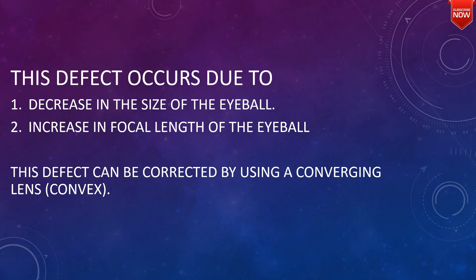Hypermetropia occurs due to a decrease in the size of the eyeball and an increase in the focal length of the eye lens. This defect can be corrected by using a converging convex lens of suitable focal length.